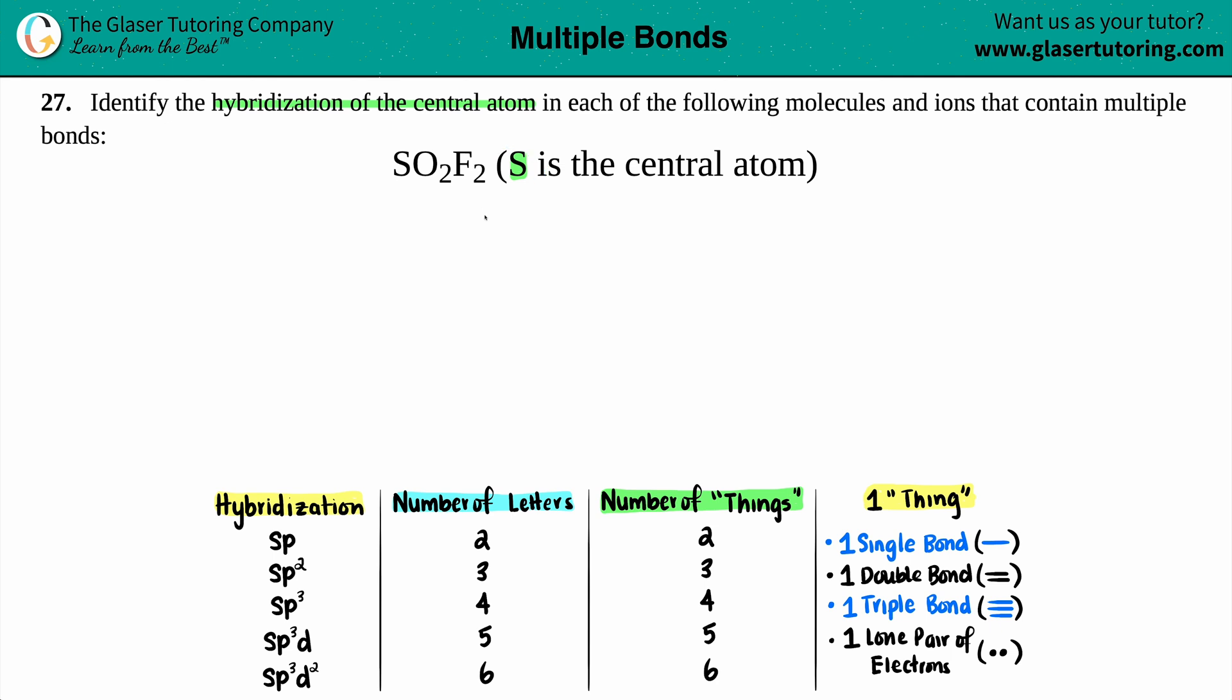Now, whenever you're trying to find a hybridization, the easiest way to go about this is to draw a Lewis structure. Yes, it's one extra step, but I promise you that once you get that Lewis structure, the hybridization is just a topping on the cake, right? It's easy. It's easy as pie. And I guess I'm hungry because it's 7:47 in the morning, and I'm already talking about pies and cakes. But anyway, let's draw the Lewis structure.